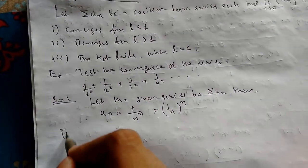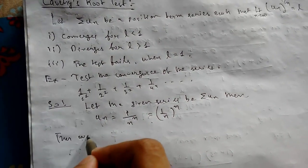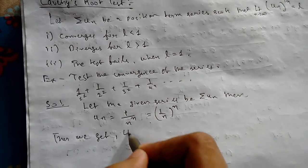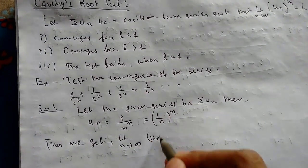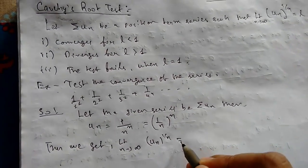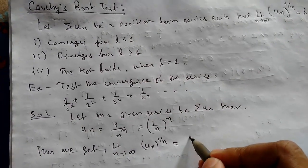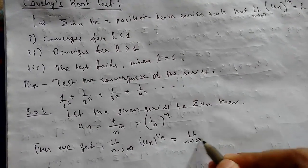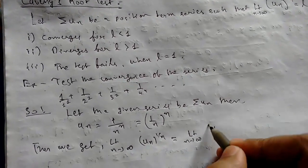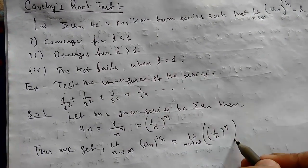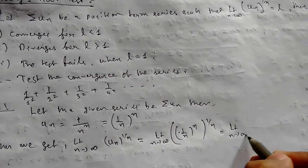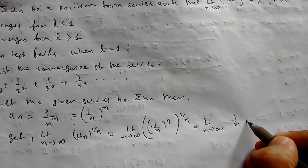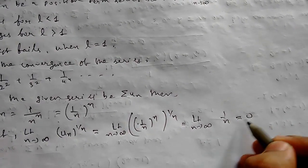Now we get limit n tending to infinity of (u_n)^(1/n). This is the definition of Cauchy's Root Test. Substituting the value, this will be [(1/n)^n]^(1/n), so this is 1/n, which equals zero. Putting the value of infinity, 1/infinity is zero